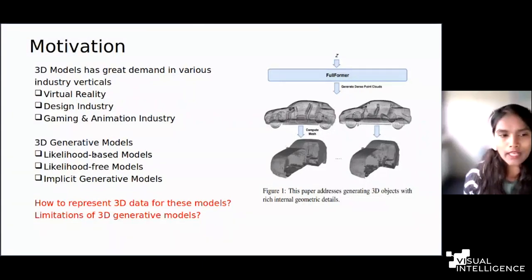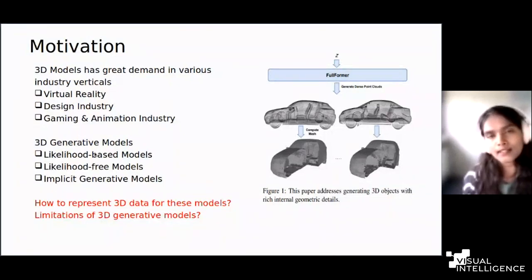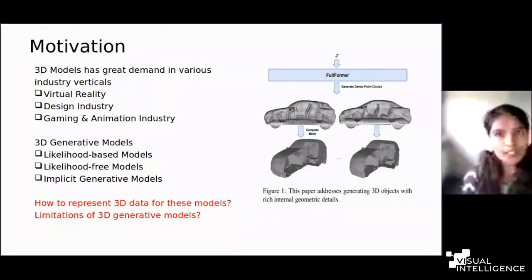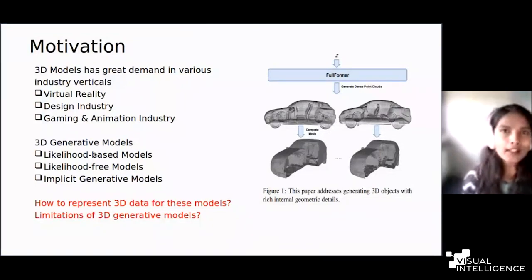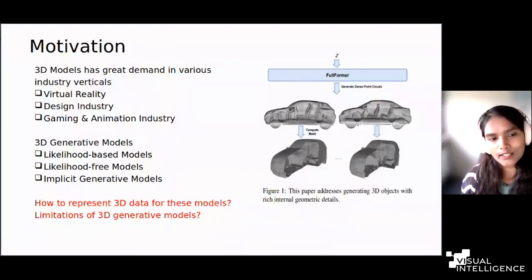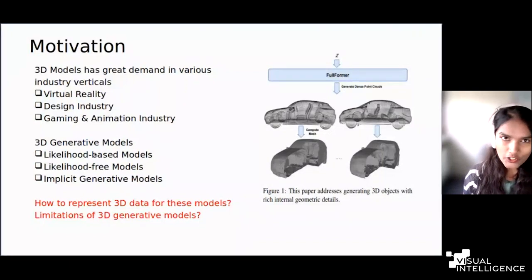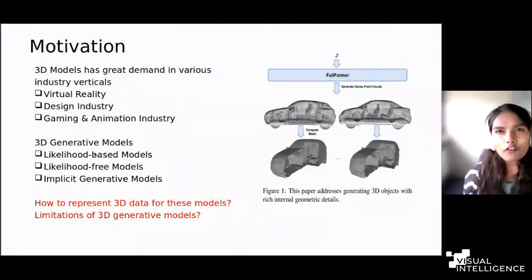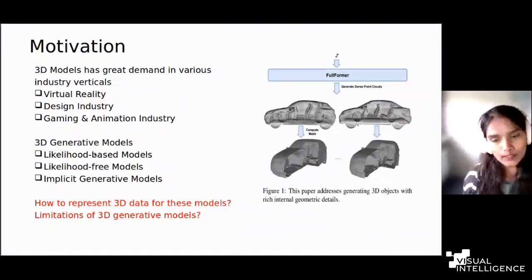When dealing with generation, we have two questions. To effectively represent 3D data in a generative model, you need to represent it effectively. In 2D it is easy because we have well-known pixel representations for images. But in 3D, there are many data representations available and we need to model an effective one so our generative model can produce more diverse new instances. These models also have limitations: likelihood-based models are super-slow, and likelihood-free models often have mode-collapse problems. Even in implicit models there are certain limitations we will discuss further.